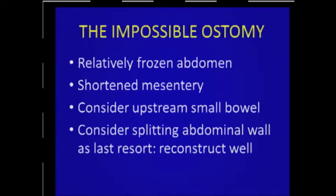What about the really impossible ostomy in the really big patient? If you have a frozen abdomen, it's hard to mobilize bowel, or the mesentery is shortened, you can consider going more upstream and mobilizing the small bowel further. As a last resort, I've actually split the abdominal wall from the midline, made a transverse incision over to where the ostomy hole is going to be, laid the bowel up against the abdominal wall, sutured it to it, and closed that transverse defect. Try to get the skin closed well because you want a flat surface — sometimes that's the only way to make an ostomy in a really bad abdomen.